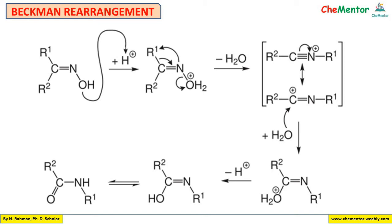This is the mechanism for Beckmann rearrangement. Mechanism is the backbone of organic chemistry, but many students are scared of it. To understand mechanism you just need basic concepts. In this case the steps are: first, protonation; second, dehydration; third, 1,2-alkyl shift; then resonance, nucleophilic attack, deprotonation, and keto-enol tautomerism.